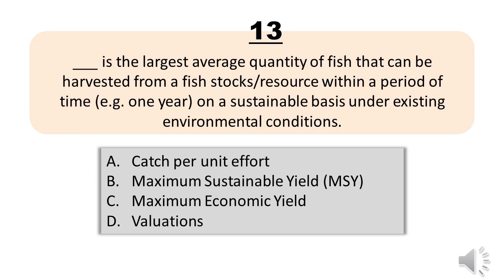Number 13. Blank is the largest average quantity of fish that can be harvested from a fish stock/resource within a period of time, for example one year, on a sustainable basis under existing environmental conditions. A. Catch per unit effort. B. Maximum sustainable yield, MSY. C. Maximum economic yield. D. Valuations. The correct answer is Letter B. Maximum sustainable yield, MSY.